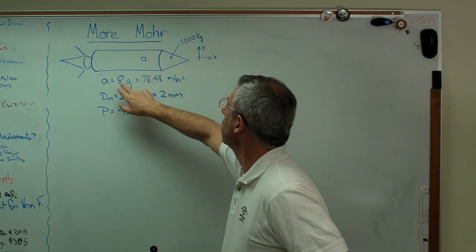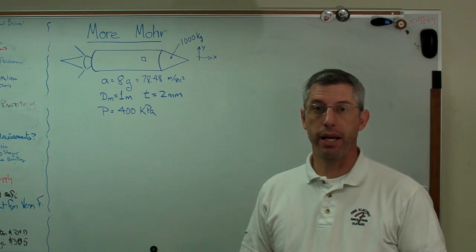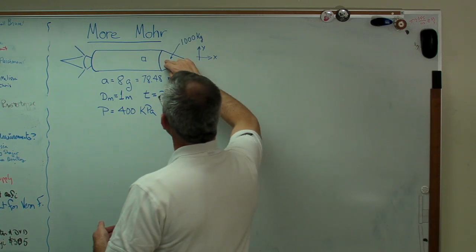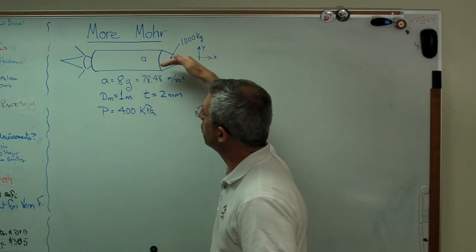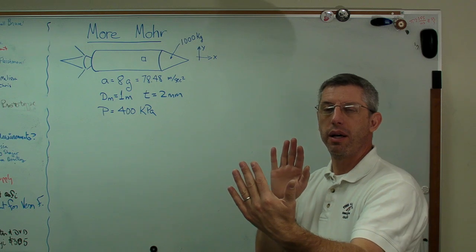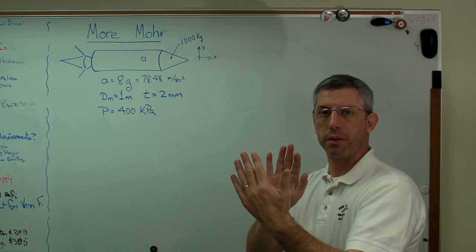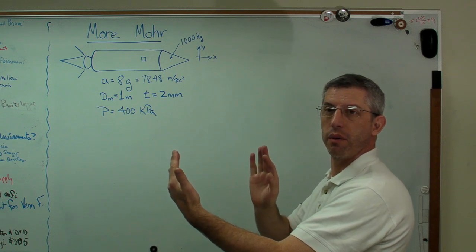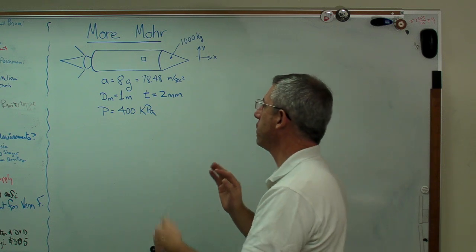Now we've got a thousand kilogram payload being accelerated at eight Gs, which is about right for a rocket. Since there's an acceleration, there's an inertial force going that way. Basically, the structure of the rocket is being compressed between the inertial force of the payload pushing back and the engine pushing forward.